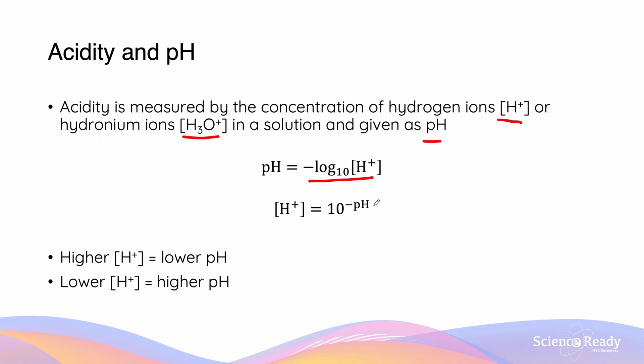We calculate the hydrogen ion concentration by doing the reverse of the log base 10, which is 10 to the power of the negative pH to get our H+ concentration.